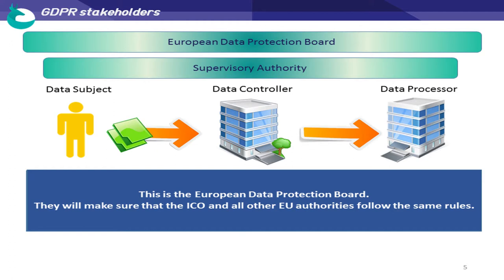The difference between a data controller and a data processor is that the data controller determines what they're going to do with the data. A data processor can only do with the data what the data controller tells them they can do. So if you're a data processor, you can't start looking at the data and marketing people or anything like that. Brian has got rights, and all of these rights are written in the Data Protection Act. The biggest difference now is that organisations have to prove that they're compliant and managing to those principles. If they can't prove it, that's when they start to get into trouble.